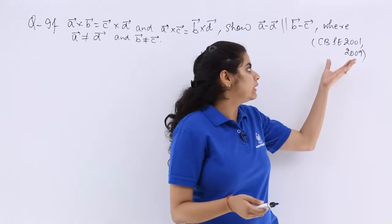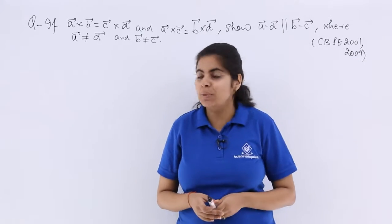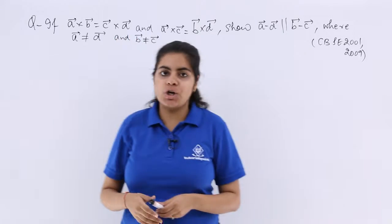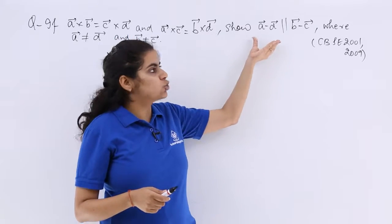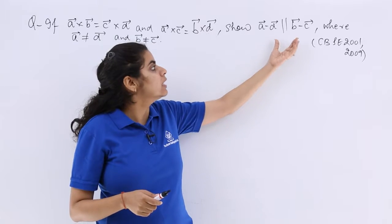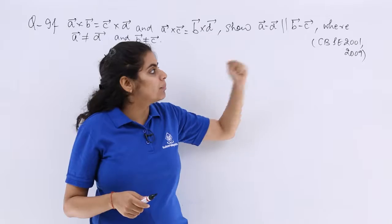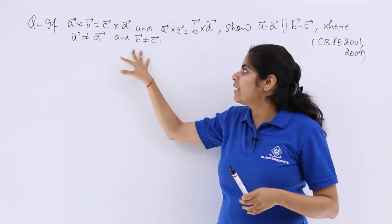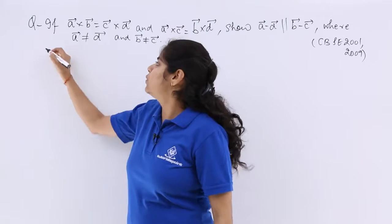This question is highly important, asked in the years 2001 and 2009 as well. If A⃗×B⃗ is equal to C⃗×D⃗ and A⃗×C⃗ is equal to B⃗×D⃗, show A⃗-D⃗ is parallel to B⃗-C⃗, where A⃗ is not equal to D⃗ and B⃗ is not equal to C⃗.